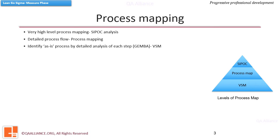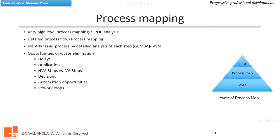The current state process map is created by actually walking on the shop floor — called a Gemba walk — and experiencing the process firsthand. This provides a valuable learning experience; we can quickly gain insight about the actual flow and find opportunities for waste elimination. Just sitting in a room to draw the process is not recommended at all. Value stream mapping needs meticulous observation, time, and interviews with the actual practitioners of the process.